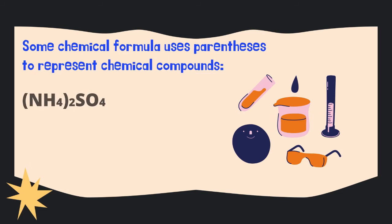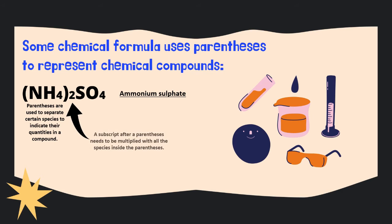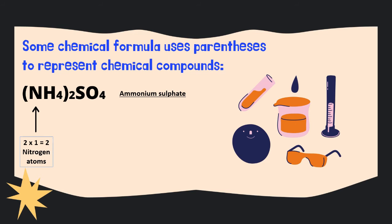Sometimes a chemical formula uses parentheses to represent a chemical compound. We take ammonium sulfate as an example. Parentheses are used to separate certain species to indicate their quantities in a compound. A subscript number after a parenthesis means that it needs to be multiplied with all the species inside the parenthesis. This means we have two times the NH4 species in ammonium sulfate.